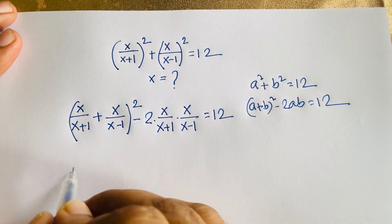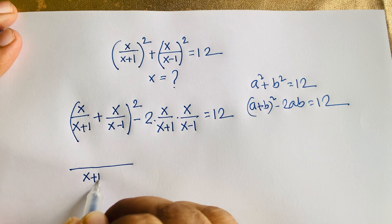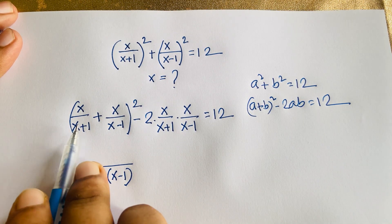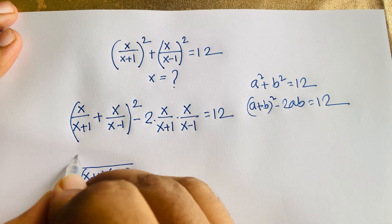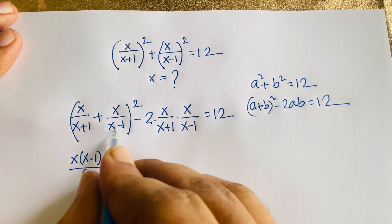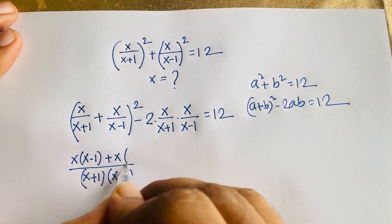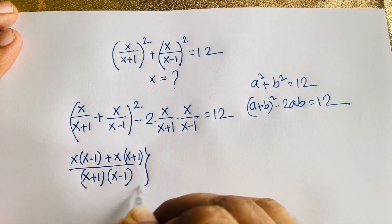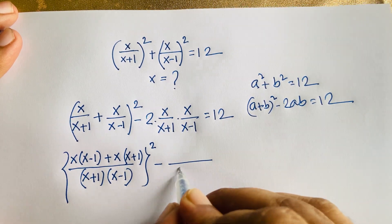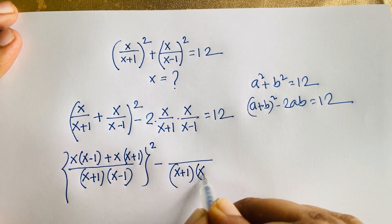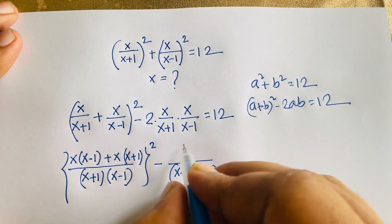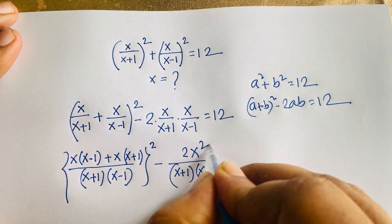The least common denominator of (x+1) and (x-1) is (x+1)(x-1). Combining the fractions in (a+b): x(x-1) plus x(x+1), all over (x+1)(x-1), whole squared, minus 2ab where ab = x²/((x+1)(x-1)), giving 2x² in the numerator, is equal to 12.